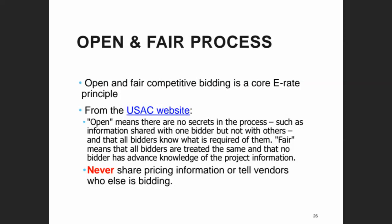You have to make sure you keep each vendor's information separate and don't share it until after the bid evaluation is complete. Be aware that USAC may ask for your evaluation and all the bidding information during some kind of audit, and you have to be mindful of open records requests as well. Make sure everything is above board to protect your library — follow E-Rate program rules as well as your local policies.